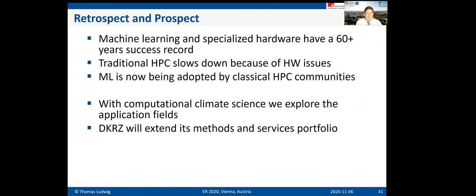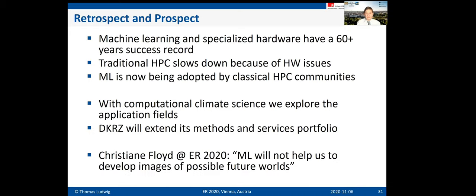To summarize: there has been a lot of progress in machine learning over decades, and high-performance computing faces a hardware slowdown. We can apply machine learning to HPC and develop new algorithmic ideas, which DKRZ and its users are already pursuing. And as Christiane Floyd noted in yesterday's talk, machine learning will not help us develop images of possible future worlds — which is truly the hard challenge of future climate simulations. Thank you very much for your attention.